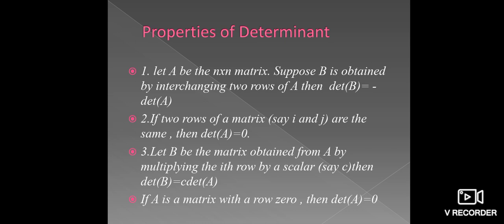Second, if two rows of a matrix, say i and j rows, are the same, then det(A) = 0.